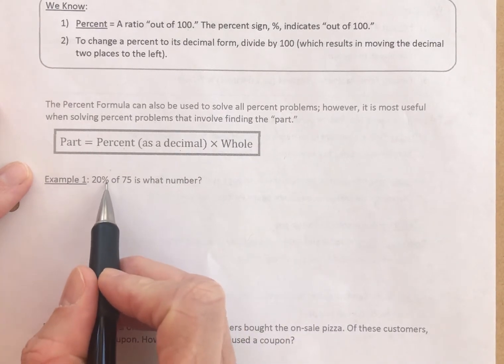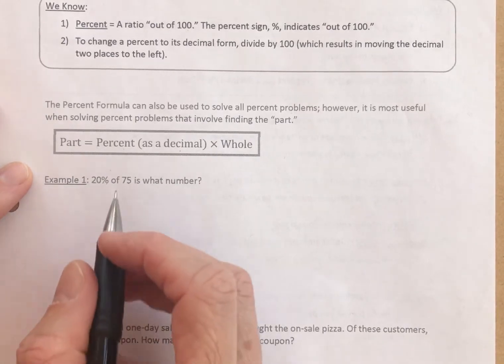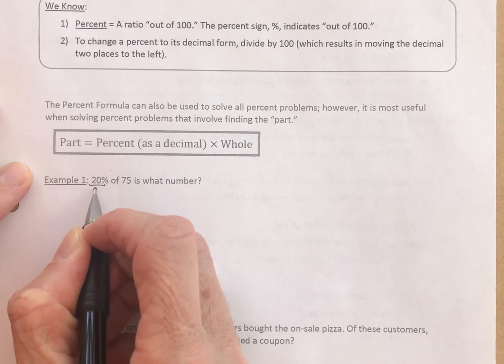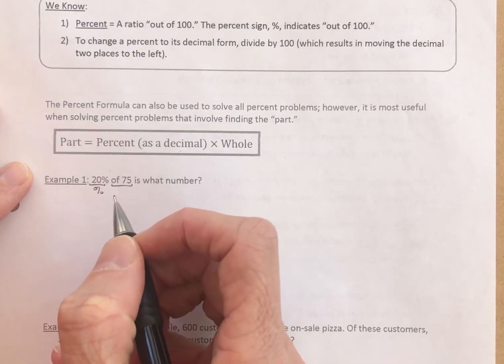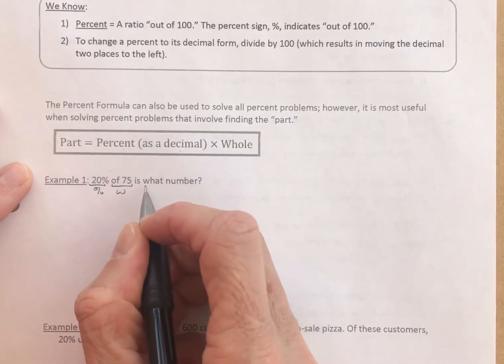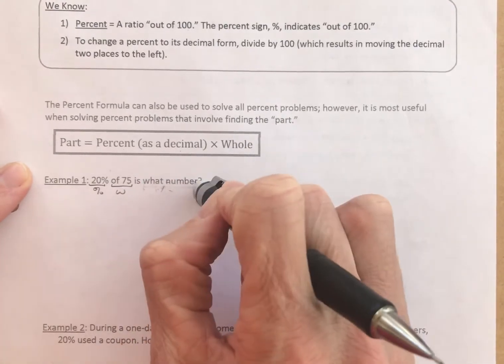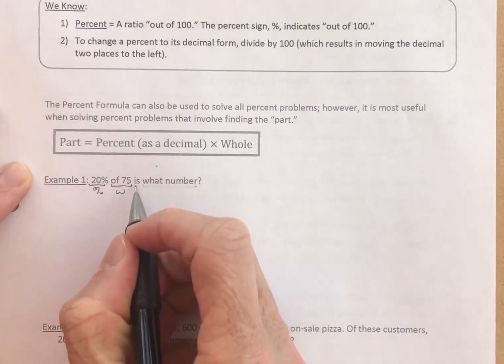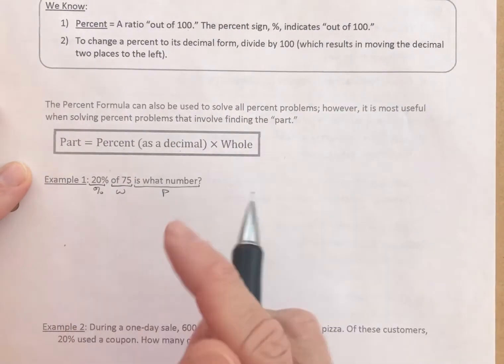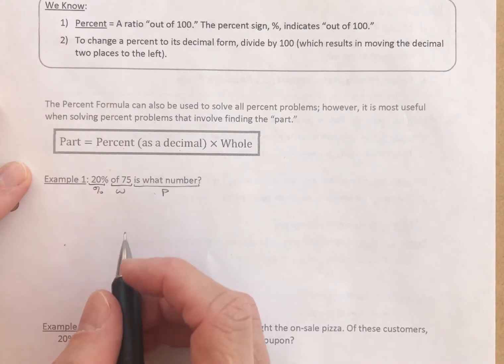Example, 20% of 75 is what number? So let's see here. This is the percent. We know that the word of, percent is always of something, and that indicates the whole. We're looking for is, as recalled from the last video, is often points to the part. And so, we can set this up using the percent proportion, or we can use the percent formula.